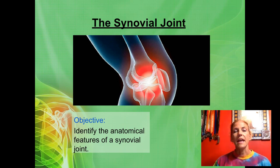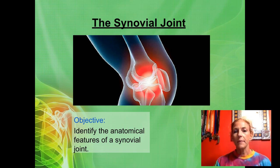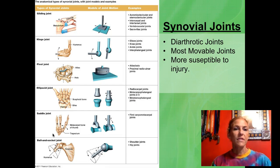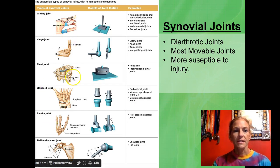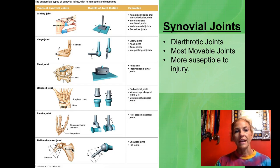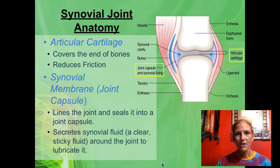Today we're going to narrow in and talk about the synovial joint in particular, and what we want to be able to do is identify the anatomical structures within the joint. Why do we care about the synovial joint more than the others? It's a diarthrotic joint, meaning it moves a lot, and because it moves a lot it's more susceptible to injury. So it's reasonable to learn about the anatomical features of these joints to understand injuries better.